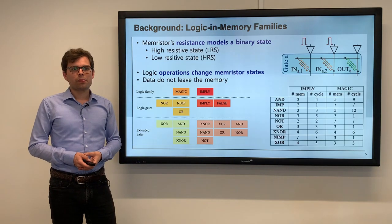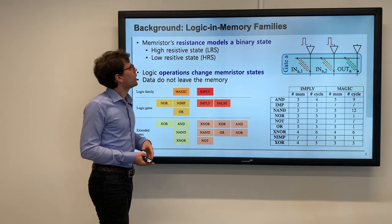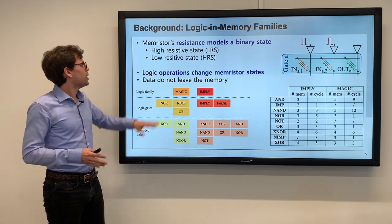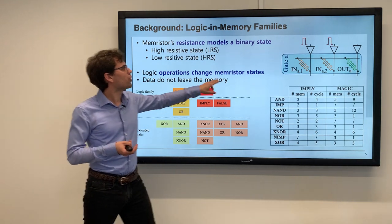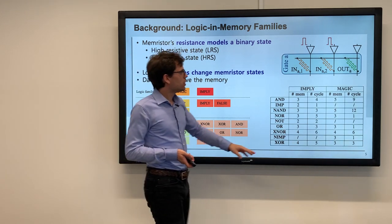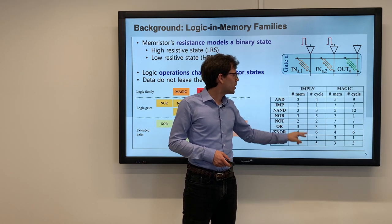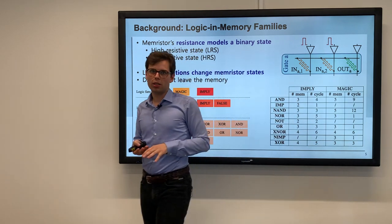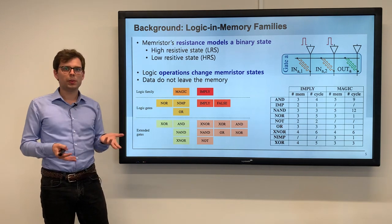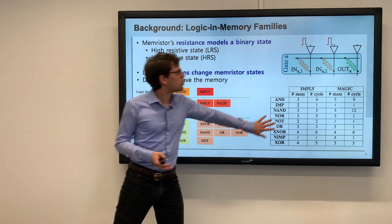The impact of faults on analog compute in memory is well known with many papers available, but for logic in memory it is not. Each of the three resistors can have either a low resistive or high resistive state, giving a one or zero in binary operation. A logic operation then changes the memristive state of a third memristor following the state of the first two, so the data don't leave the memory. There are different logic families — the two most popular being MAGIC and IMPLY — with certain base operations or logic gates like NOR, NIMP, and OR in MAGIC, from which you can build extended logic operations.